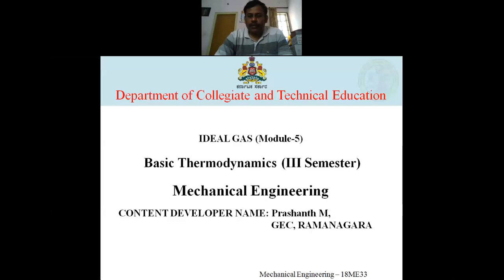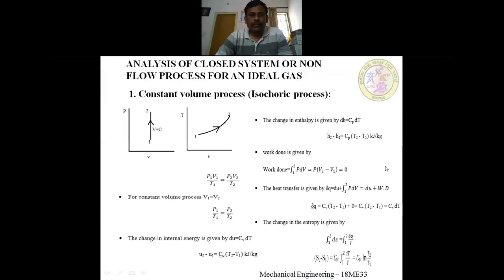In today's class, we will talk about five processes: constant volume, constant pressure, isothermal, reversible adiabatic, and polytropic. For all these five processes, we will discuss the equations for heat transfer and the properties — change in internal energy, change in enthalpy, and change in entropy.